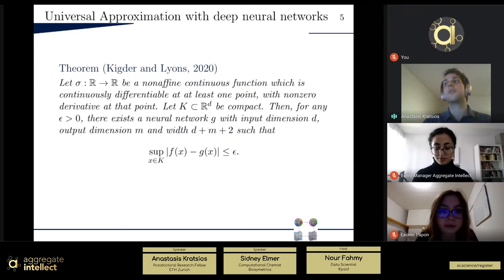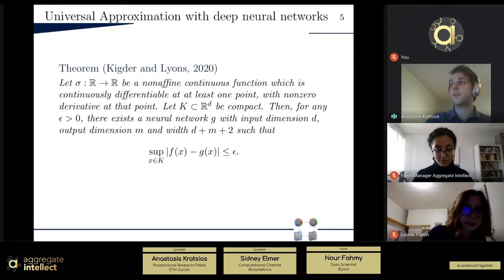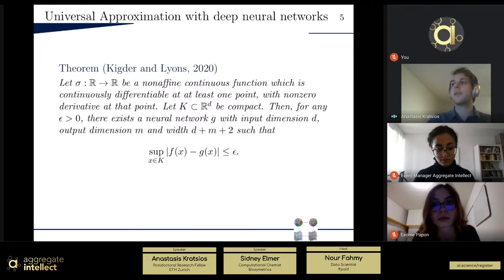So actually last year or more or less, Terry Lyons and Patrick Kidd here together proved a theorem that said that if you bound the width of your network, so the dimension, if you will, or co-dimension of each of those affine maps and you keep applying the sigma-affine-sigma-affine procedure, if you do that and this nonlinear sigma is non-affine continuous and the regularity condition is that it's continuously differentiable at least one point, then if you use arbitrary deep networks,